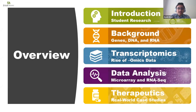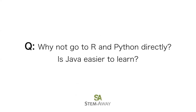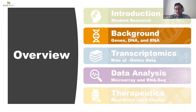That was our introduction on how to get involved in student research. Next, let's dive into the biology background, starting with genes, DNA, and RNA. There was a question: why not go to R and Python directly — is Java easier to learn? Java is important because most high school and college level classes are taught in Java. Starting with Java is useful to get a feel for the syntax — what it means to define a function and have objects in coding. However, if you are already familiar with coding, I would definitely recommend starting with R and Python, because those are very powerful languages with direct applicability.